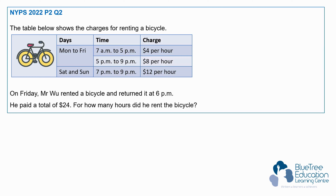Question 2. The table below shows the charges for renting a bicycle. Monday to Friday, 7am to 5pm is charged at $4 per hour. 5pm to 9pm is charged at $8 per hour. And lastly, Saturday and Sunday from 7pm to 9pm is charged at $12 per hour.